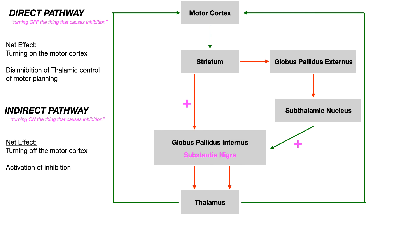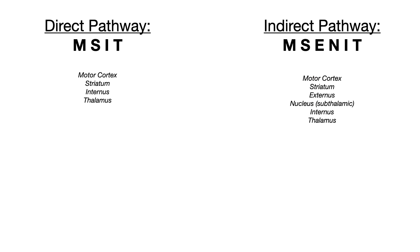To remember the order of these structures, use the mnemonic MSIT: M for motor cortex, S for striatum, I for globus pallidus internus, and T for thalamus. That applies to both the direct and indirect pathways. The one difference is that in the indirect pathway, you add IN in the very middle between the S and the I — this reminds you to also include the globus pallidus externus and the subthalamic nucleus. So MSIT for direct, and MSIT with IN inserted for indirect.